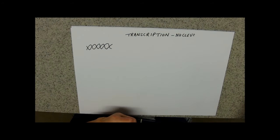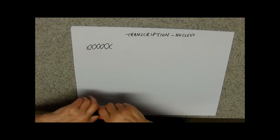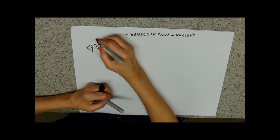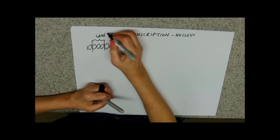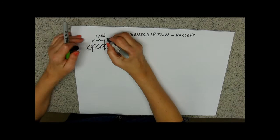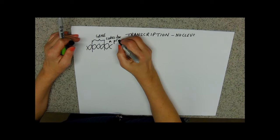And the first thing that's going to happen is that our section that is going to be transcribed or copied, so this bit here is our gene. This is the bit that's got the code in it. Remember, gene codes for protein.